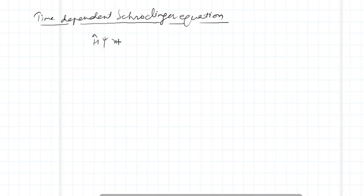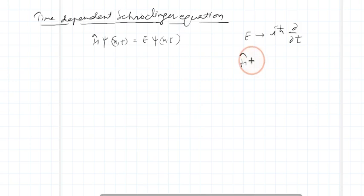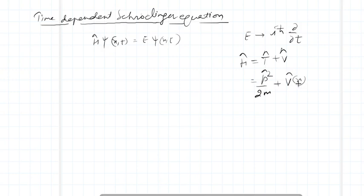We have H-psi, where psi is a function of x and t, and it equals E-psi(x,t). The energy can be expressed in terms of the energy operator: iota h-cross times the partial derivative with respect to t, where H is the Hamiltonian. The Hamiltonian is the sum of kinetic energy plus potential energy. The kinetic energy is basically p-squared over 2m, plus the potential V(x) for a one-dimensional wave function.